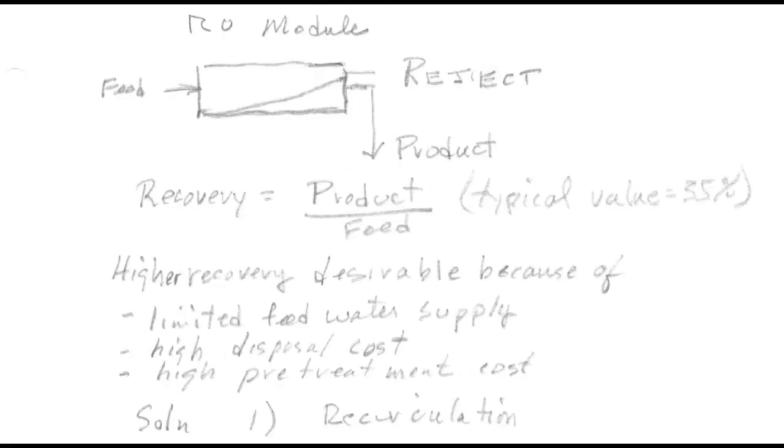Reverse osmosis modules are usually diagrammed in this manner, which is the way it's done in our book. Feed coming in from the left, a membrane, the permeate or product water going out and down on the right, and the reject water going out to the right. The recovery is the product quantity divided by the feed quantity, and a typical value is about 35% per stage. Higher recovery is very desirable in many situations.